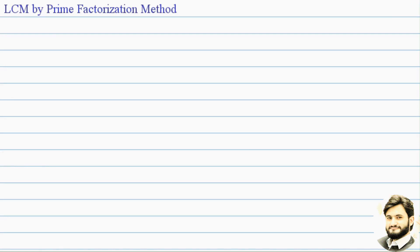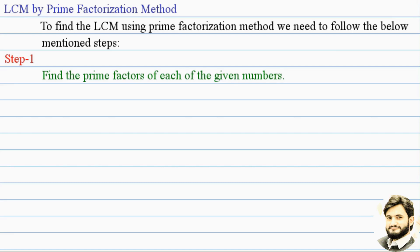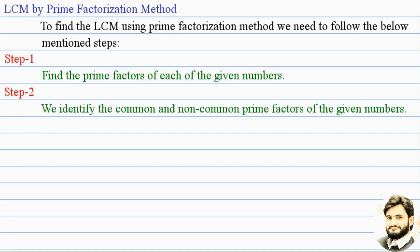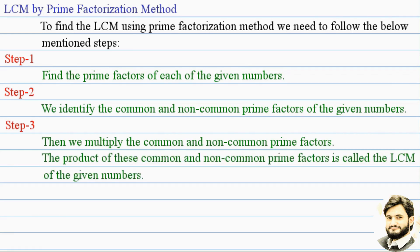LCM by prime factorization method. To find the LCM using the prime factorization method, we need to follow these steps. Step 1: find the prime factors of each of the given numbers. Step 2: identify the common and non-common prime factors of the given numbers. Step 3: multiply the common and non-common prime factors. The product of these is called the LCM of the given numbers.